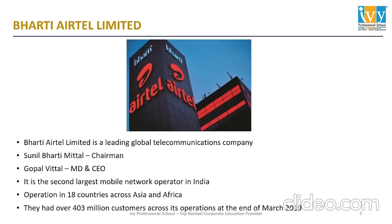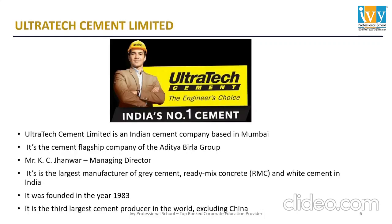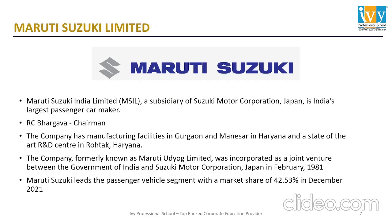Now I will give you a brief about the companies we are analyzing today. The first is Bharti Airtel Limited — it's the second largest mobile network provider in India, with 40.3 crore users as of March 2019. The next is Ultratech Cement Limited, the largest cement producer in India and a flagship company of the Aditya Birla Group. The third company is Maruti Suzuki India Limited, India's largest passenger car maker, with a market share of 42.53% as of December 2021.